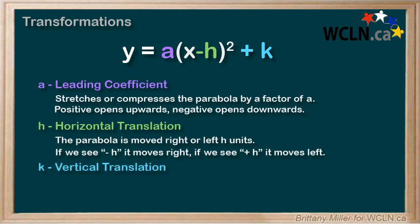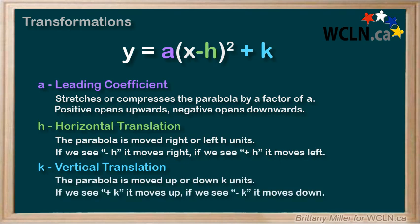k describes a vertical translation. The parabola will be moved up k units if we see positive k, or down k units if we see negative k.